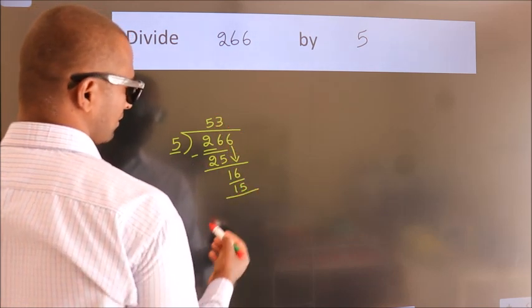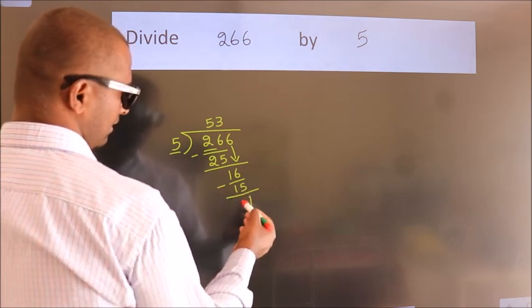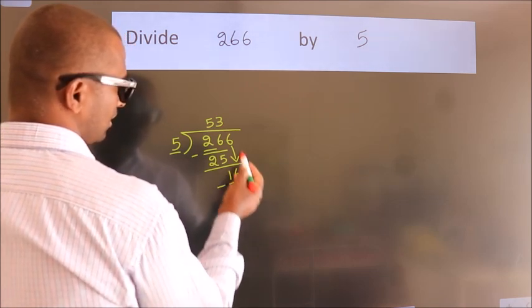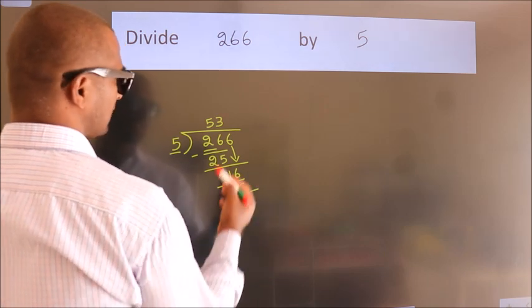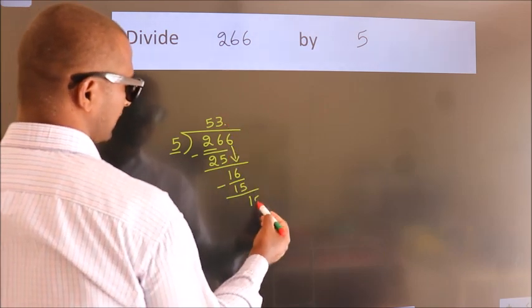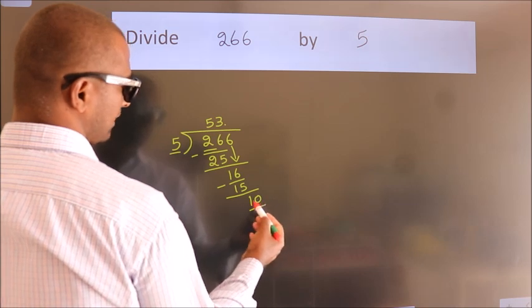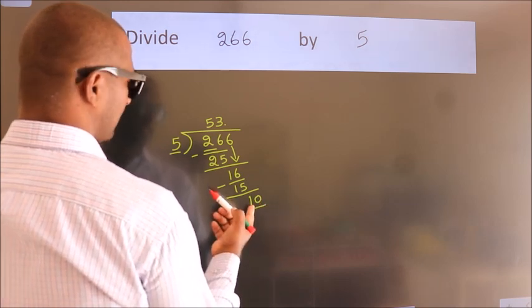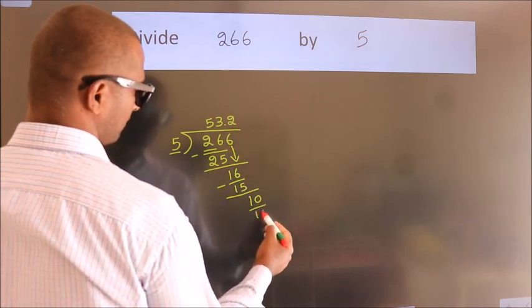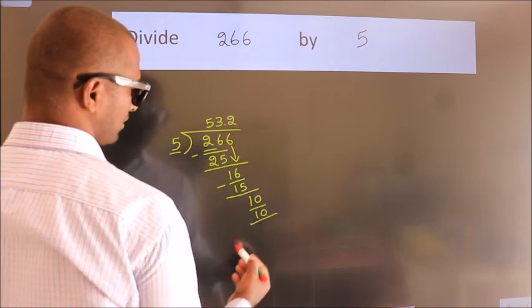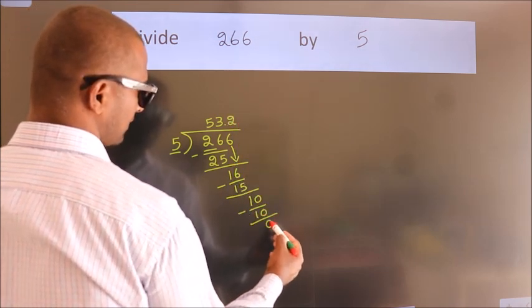Now we subtract. We get 1. After this, there are no more numbers to bring down. So what we do is put a dot and take 0. So we have 10. When do we get 10 in the 5 times table? 5 twos equals 10.